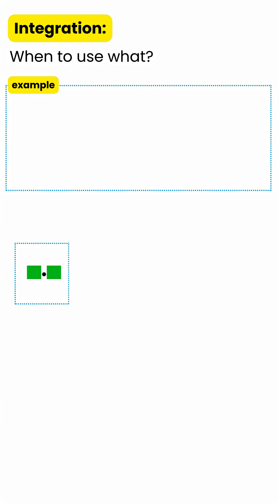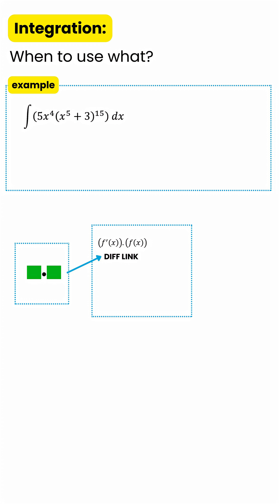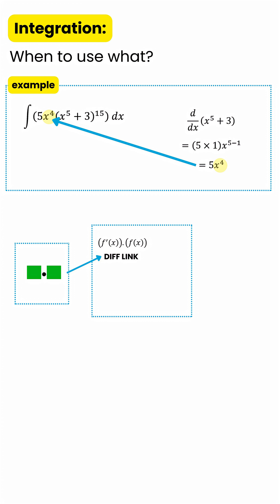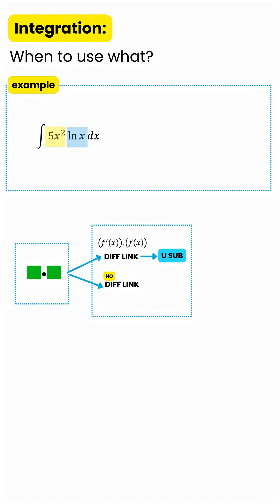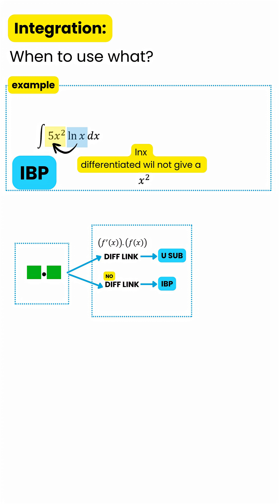When two parts are multiplied, check if there's a differentiation link from the second part to the first. If, when you differentiate the second part, you get the first one's letters and powers, then use u-substitution. If there's no differentiation link — in other words, you can't get the first one's letters and powers — use integration by parts.